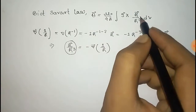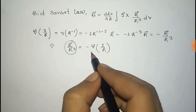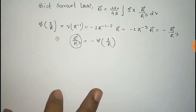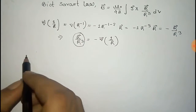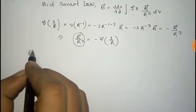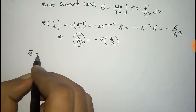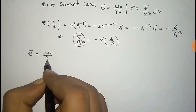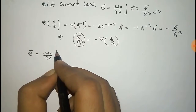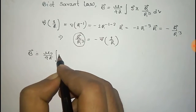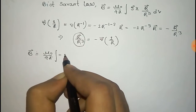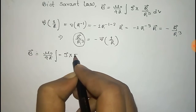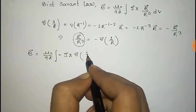So r-vector by r-cubed equals minus of the gradient of 1/r. We can replace this term with this, so B-vector equals μ₀/4π times the integration of J cross, and there will be a minus because of the gradient of 1/r.